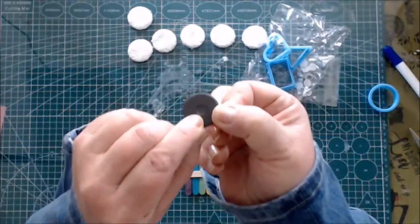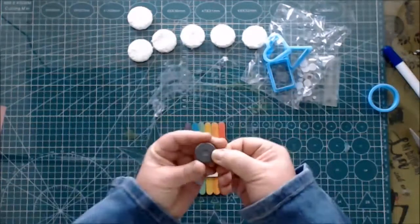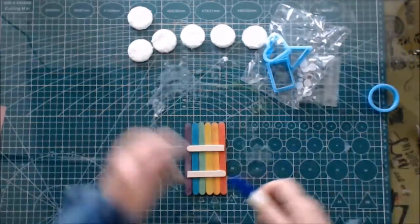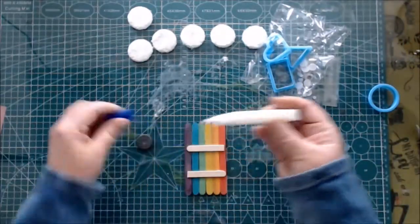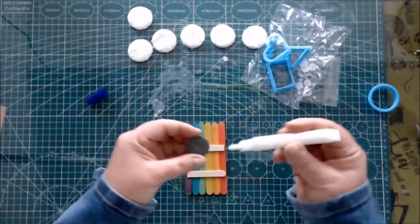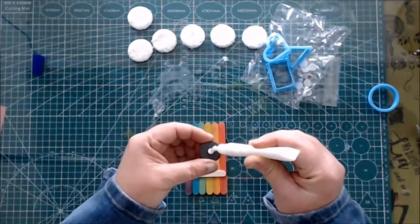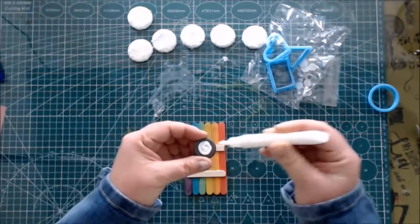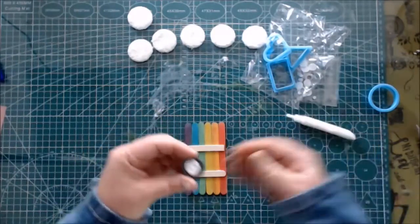Take your fridge magnet and look for the side with the little circle. That is where you put the glue. Put enough glue onto the magnet and glue it right in the middle of your popsicle sticks.